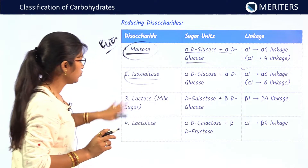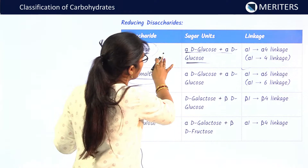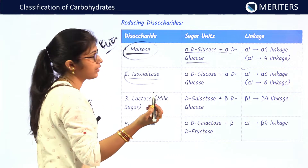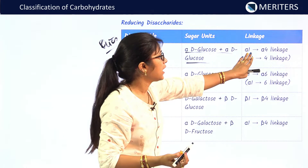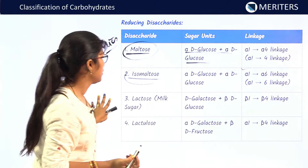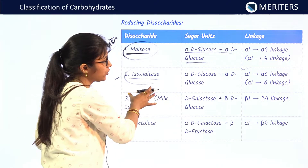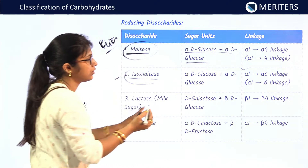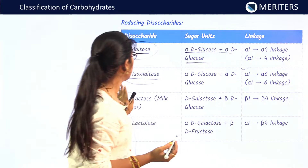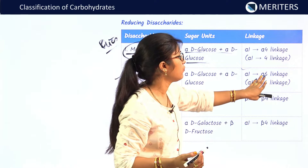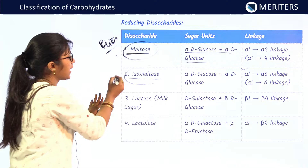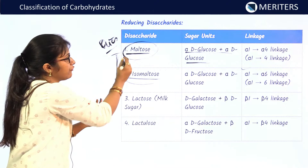Among reducing disaccharides: maltose has sugar units alpha-D-glucose and alpha-D-glucose with an alpha-1,4 glycosidic linkage. Isomaltose also has alpha-D-glucose and alpha-D-glucose, but the linkage is alpha-1,6. So maltose and isomaltose differ only in linkage — this is an important exam question.